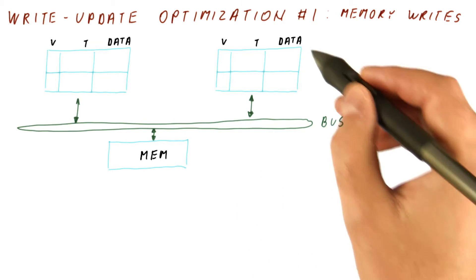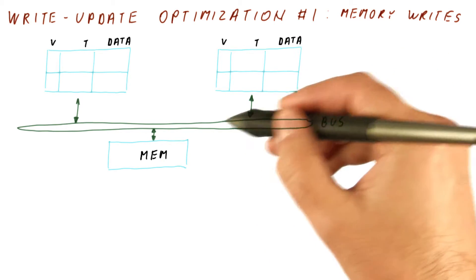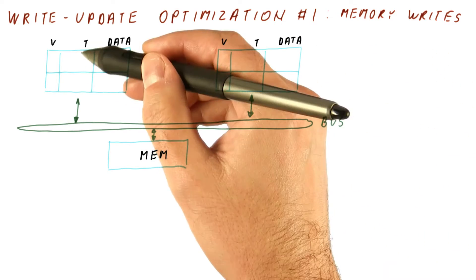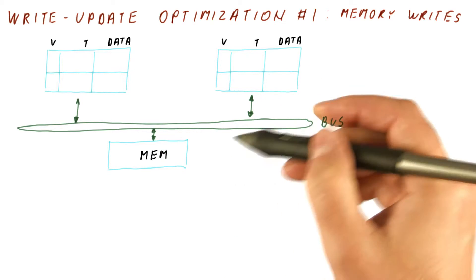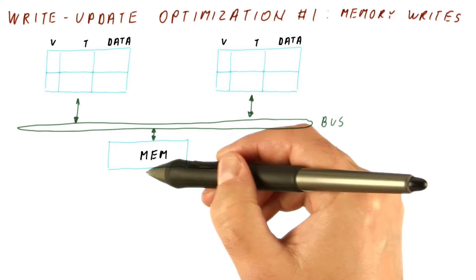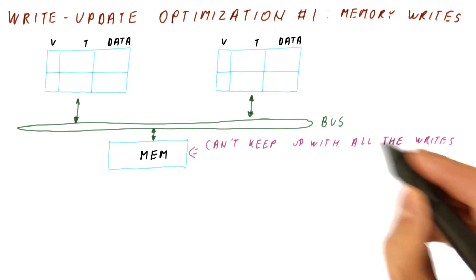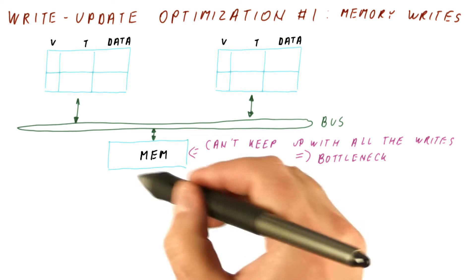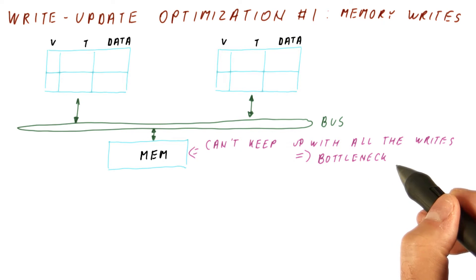Remember that in a write-update protocol, every write in any of the processors needs to be broadcast on the bus and needs to update the memory. Because memory is big and slow, it cannot keep up with all the writes.